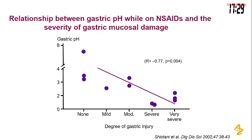The complications of NSAIDs are very important. This study used normal volunteers — approximately 11 subjects — who took non-selective NSAIDs. By the end of three days, they had their gastric injury classified as none, mild, moderate, severe, or very severe. After three days, without NSAIDs they did not show significant injury.